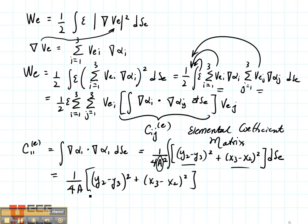Now we can go through and do the same thing for C12, C13, C21, C22 and so on. And that will give us our full elemental coefficient matrix. Then if we write C for the element as C11, C12, C13, 21, 22, 23, 31, 32, 33. That's our elemental coefficient matrix or our elemental coupling matrix.